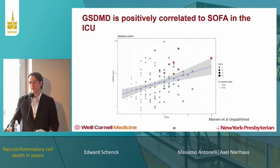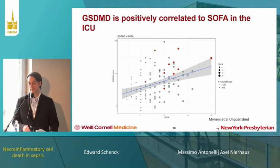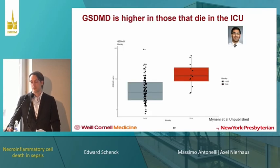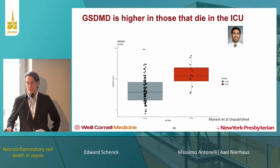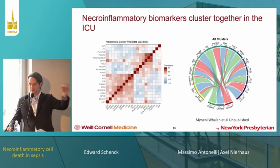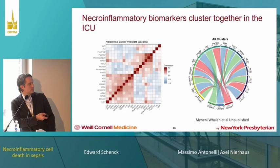More recently, with unpublished data, we show that gasdermin D in plasma samples is positively related to SOFA score and to other markers of pyroptosis activity in the ICU, and is a decent predictor of death in that population. Putting this together: necroinflammatory biomarkers — the combination of all these biomarkers — cluster together, and patients cluster differentially as they relate to the relative contribution of these biomarkers. These clusters are related to baseline severity of illness, baseline risk of death, and outcomes.